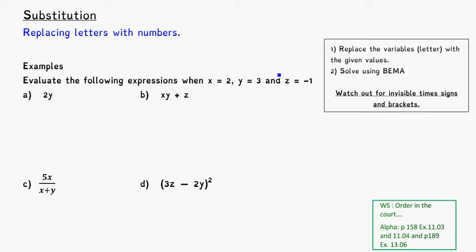So here's a quick recap on substitution, which is really just replacing the letters with the numbers. Sometimes we're given ugly looking algebraic expressions with lots of variables or letters, but then they'll give us some information that says, well, let's pretend that x is 2, y is 3, and z is negative 1.